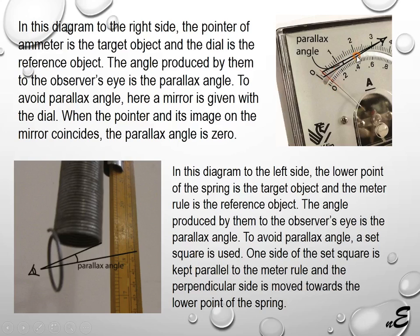To make the parallax angle zero, a mirror is placed on the instrument. When the image of the pointer and the pointer itself coincide from the observer's eye — meaning all three are on the same line — then the parallax angle will be zero and there will be no parallax error. So a mirror is placed to overcome parallax error.